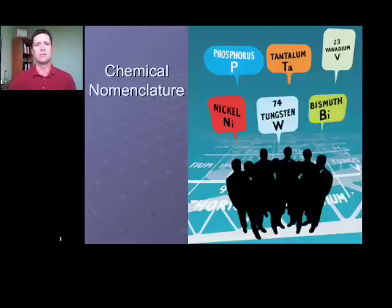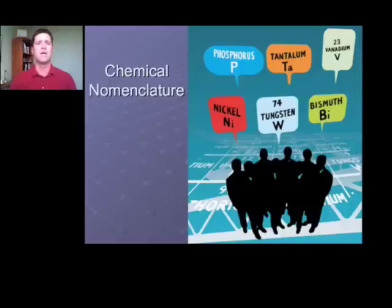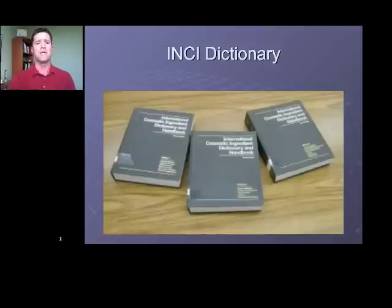Chemical nomenclature is something that's often introduced in first year chemistry, but really it's organic chemistry in second year where it becomes important. There you'd learn how to name ethers and alcohols, acids, and all of these different organic compounds. The system used in college chemistry is the IUPAC system, which refers to the International Union for Pure and Applied Chemistry. In the cosmetic industry, we don't use IUPAC — instead we use the INCI Dictionary.